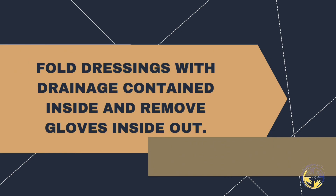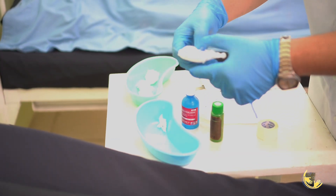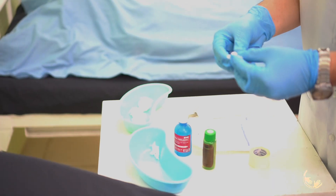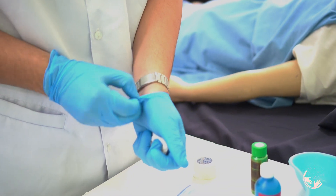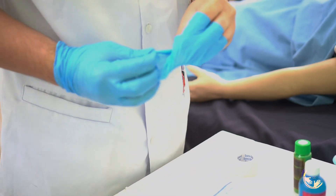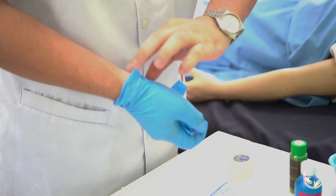Step 7: Fold dressings with drainage contained inside and remove gloves inside out. This prevents contamination and safely disposes of soiled materials.